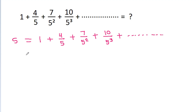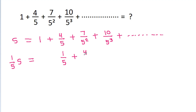If we multiply S with 1/5, then (1/5)S will be equal to 1 times 1/5 = 1/5, minus 4/5 times 1/5 = 4/5², minus 7/5² times 1/5 = 7/5³.